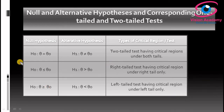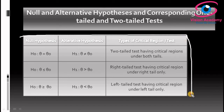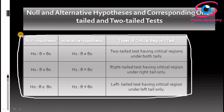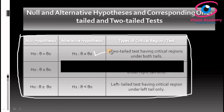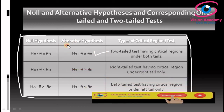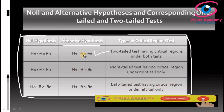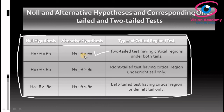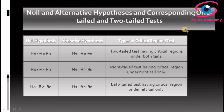According to this tabulation, you can determine the type of tail test. Most importantly, to decide the type of tail test, concentrate on the alternative hypothesis only. If it is 'not equal to,' it is a two-tailed test; if it is 'greater than,' it is a right-tailed test; and if it is 'lesser than,' it is a left-tailed test. Now let us consider some real-life examples.